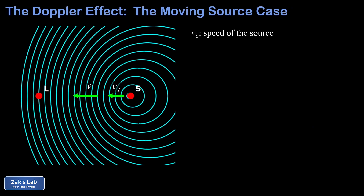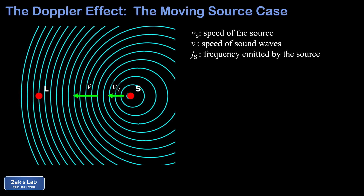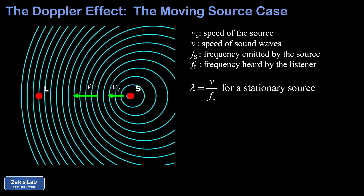Now we move on to the moving source case, where we have a stationary listener L and the source moving toward the listener at speed VS. We use plain V for the speed of the sound waves. FS is the frequency emitted by the source and we're computing FL, the frequency heard by the listener. Recall the wavelength would be lambda equals V over FS if the source were stationary. But the source moves a little between the emission of each wave crest, so the crest spacing is closer. The source moves a distance VS times one period between wave crests.